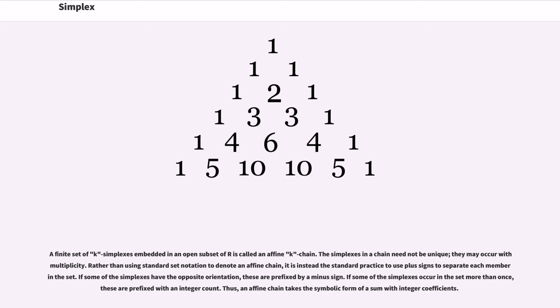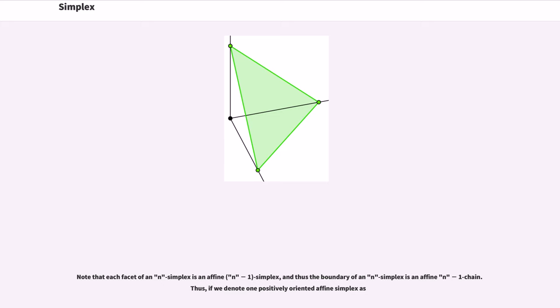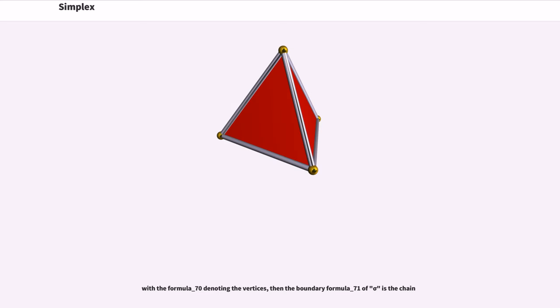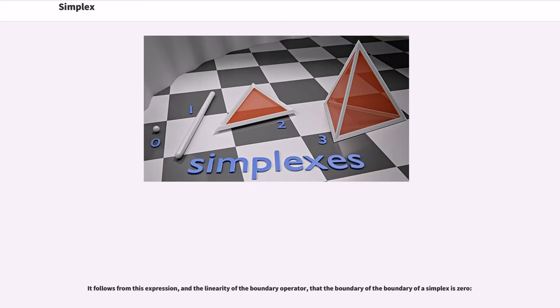A finite set of k-simplexes embedded in an open subset of R^n is called an affine k-chain. The simplexes in a chain need not be unique; they may occur with multiplicity. Rather than using standard set notation to denote an affine chain, it is instead the standard practice to use plus signs to separate each member in the set. If some of the simplexes have the opposite orientation, these are prefixed by a minus sign. If some of the simplexes occur in the set more than once, these are prefixed with an integer count. Thus, an affine chain takes the symbolic form of a sum with integer coefficients. Note that each facet of an n-simplex is an affine n-1 simplex, and thus the boundary of an n-simplex is an affine n-minus one chain. Thus, if we denote one positively oriented n simplex with the vertices, then the boundary of sigma is the chain. It follows from this expression, and the linearity of the boundary operator, that the boundary of the boundary of a simplex is zero.